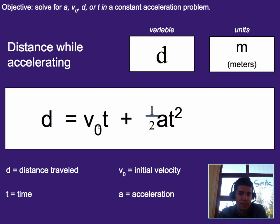So again, v-naught, or the v with a little zero, means initial velocity, d is for distance, t is the time, and the a is the acceleration in this case.